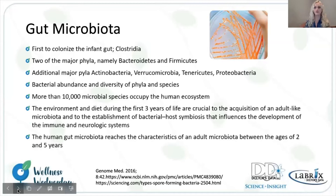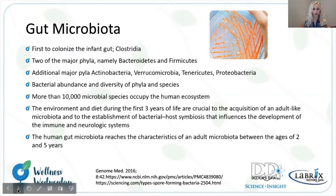The gut microbiota — the first bacteria to colonize the human gut is actually the Clostridia species. Within the gut microbiota, there are multiple phyla. Two of the main phyla, the Bacteroidetes and Firmicutes, are well known. Additional major phyla include the Actinobacteria, the Verrucomicrobia, the Tenericutes, and the Proteobacteria. With regards to the gut microbiome and the microbiota, we do want to talk about bacterial abundance and diversity of the phyla and species. This is a dynamic ecosystem with over 10,000 species, and that dynamic balance is really going to implicate human physiology.